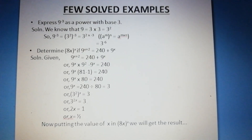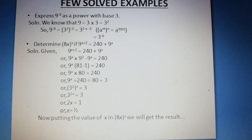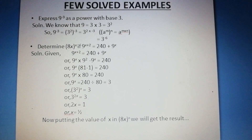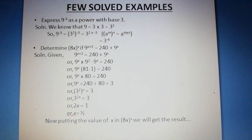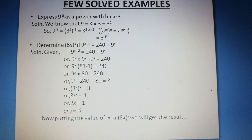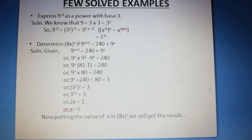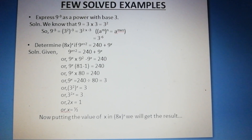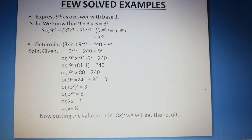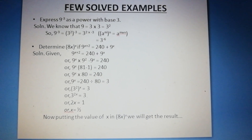A few more examples are solved for you. Express 9 to the power minus 3 as a power with base 3. So in place of 9 we can write 3 squared. So 3 squared whole to the power minus 3. Now by the law a to the power m whole to the power n equals a to the power m into n, we get 3 to the power 2 into minus 3, which is equal to 3 to the power minus 6.